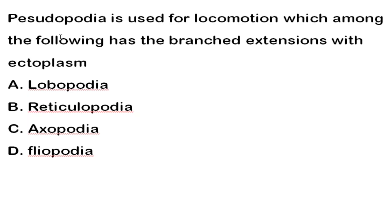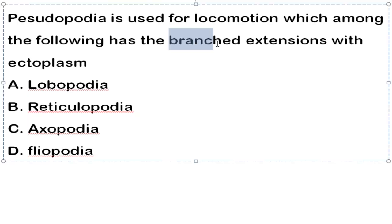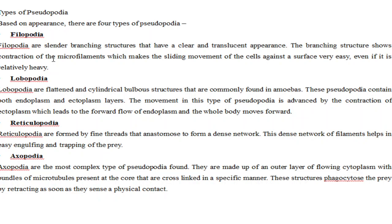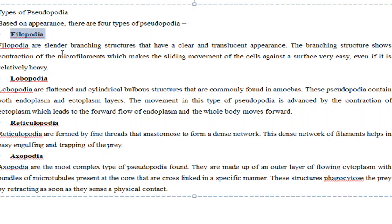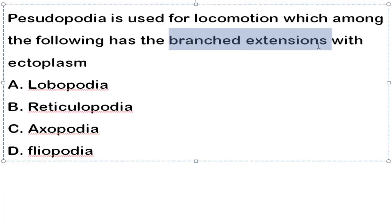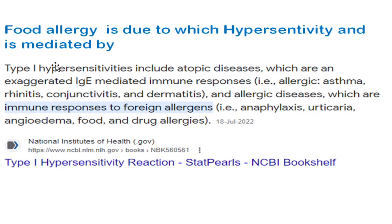The next question is about pseudopodia: which type has a branched extension? The correct answer is filopodia. Pseudopodia are classified into four important types based on appearance. Filopodia are slender and have a branching structure. Since the question asks about a branched extension, the correct answer is filopodia.